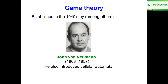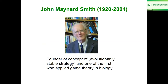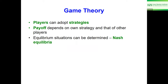Game theory was introduced by John von Neumann in Princeton in the 1940s. Later, John Maynard Smith in the UK applied it to biological situations and developed the concept of evolutionary stable strategy, an extension of the Nash equilibrium. Players adopt strategies, and it's important to assign payoffs to those strategies — for example, if one player chooses a defense chemical and the other an enzyme, both get certain payoffs.